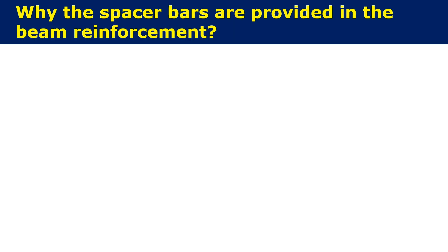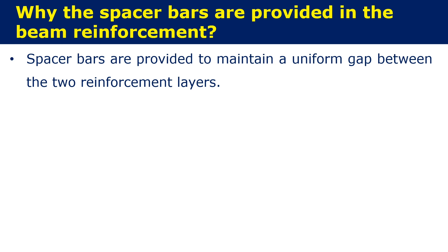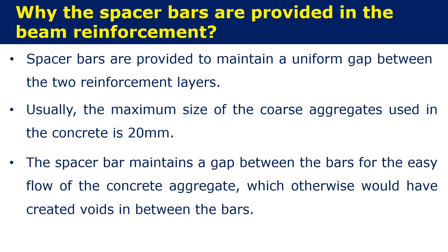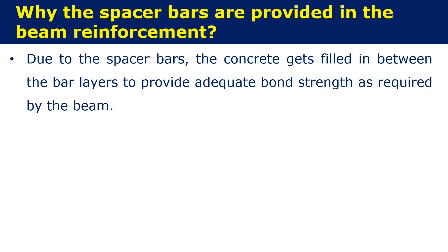Now let us see why the spacer bars are provided in the beam reinforcement. As the name suggests, spacer bars are provided to maintain a uniform gap between two reinforcement layers. Usually the maximum size of coarse aggregate used in the concrete is 20 mm. The spacer bar maintains a gap between the bars for the easy flow of concrete aggregate, which otherwise would have created a void in between the bars. Due to the spacer bars, the concrete gets filled in between the bar layers to provide adequate bond strength as required by the beam.